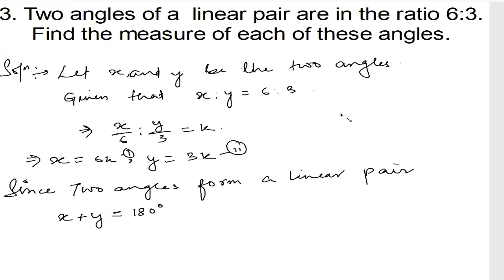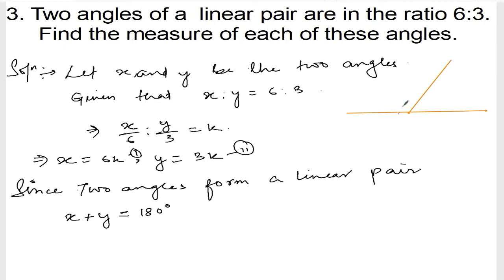If you don't understand, this is how the question is telling. There is an angle - this is one angle, another angle is this one. x is 6k.